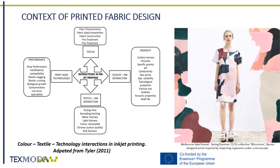Textile characteristics are one of the biggest concerns if a quality print is to be achieved, as it will strongly depend on the various interactions between the type of ink and fabric. Printing ink diffusion is influenced by ink properties, fiber types, fabric construction characteristics, and pre-treatments applied prior to printing on the textile substrate.